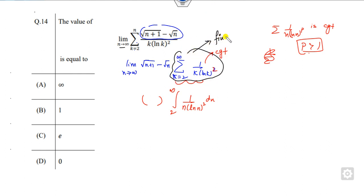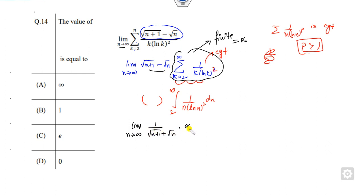Since the series is convergent, it will give a finite value. Assume that finite value is alpha. The remaining part is the limit as n approaches infinity — I can rationalize it, and it gives a finite value. When n approaches infinity, that goes to 0, which is the right answer.